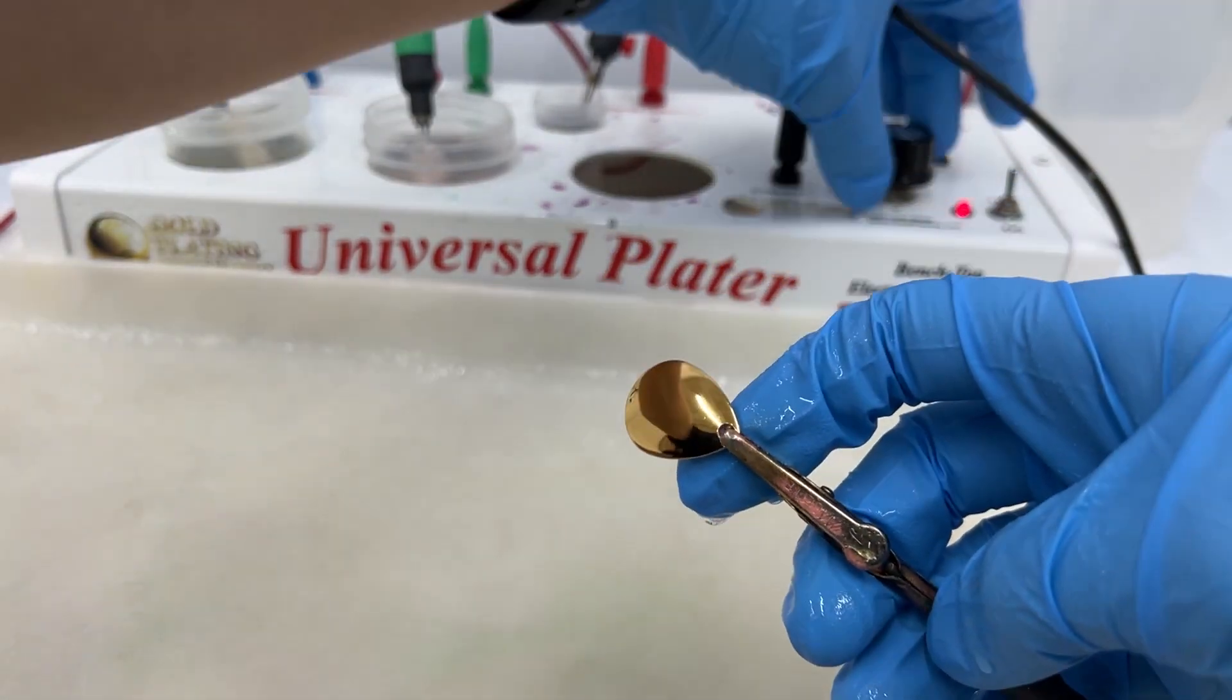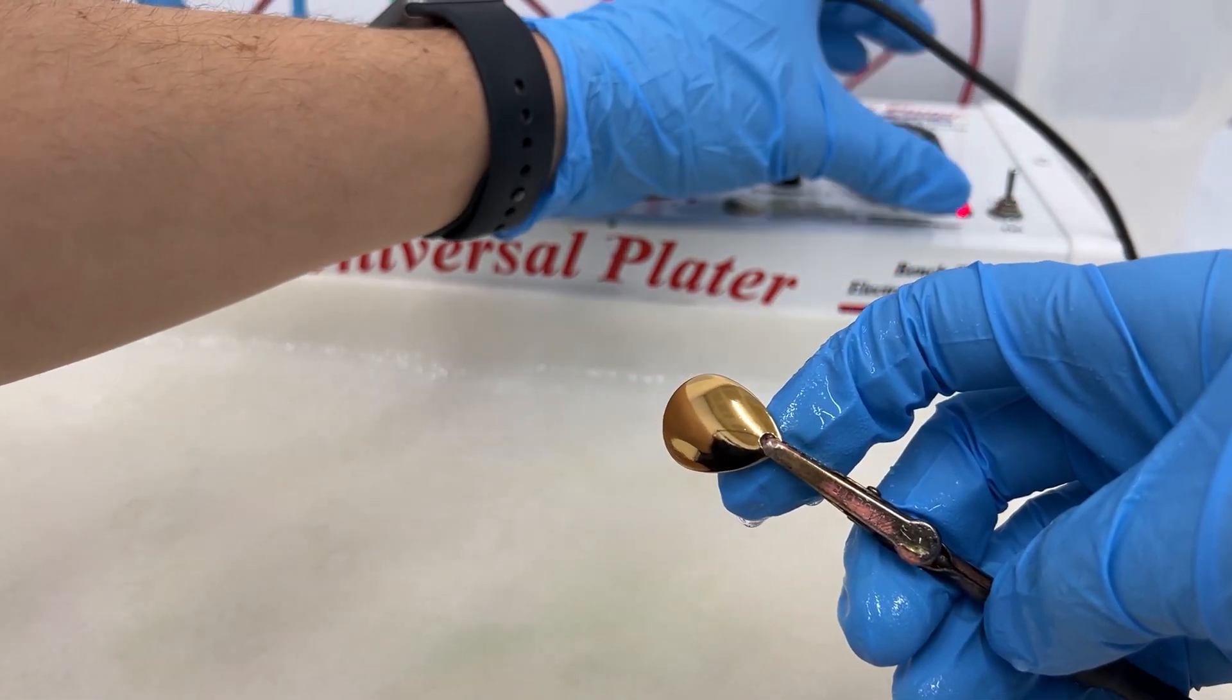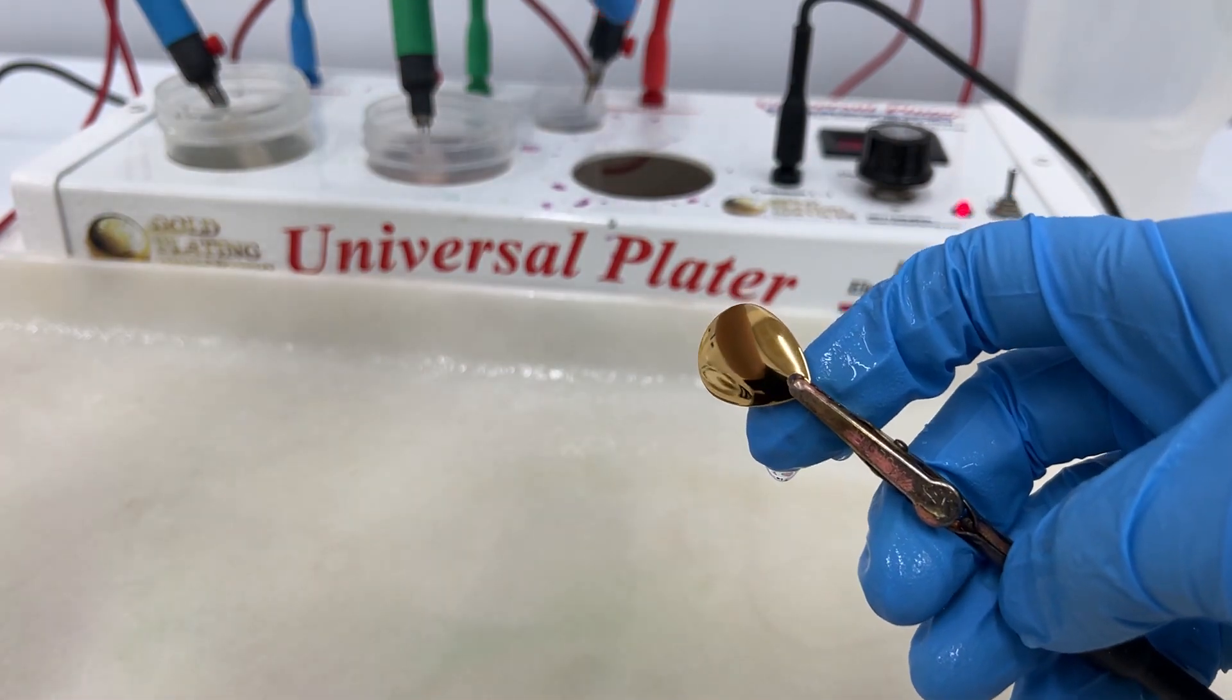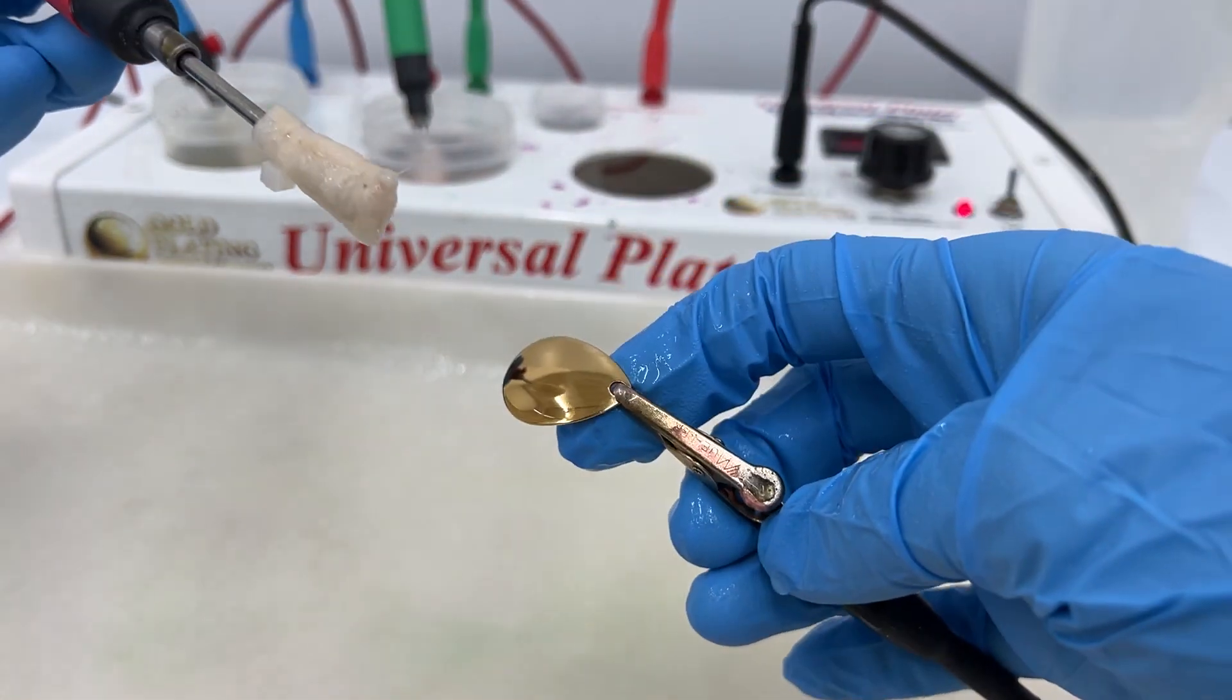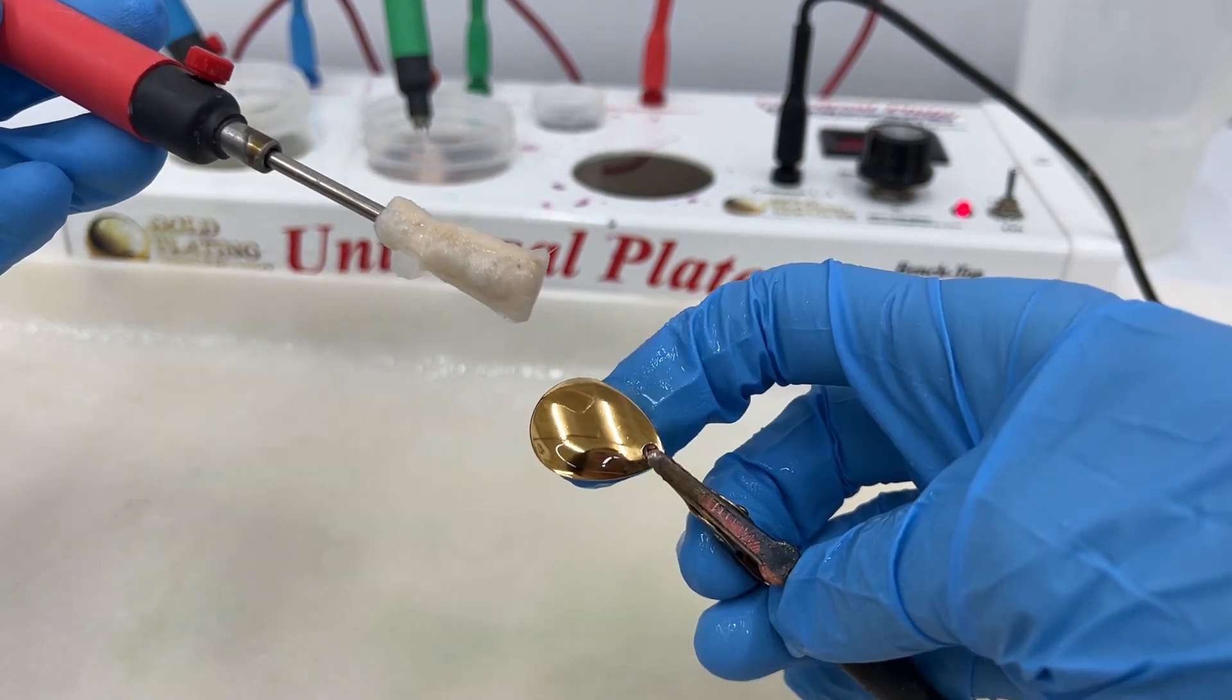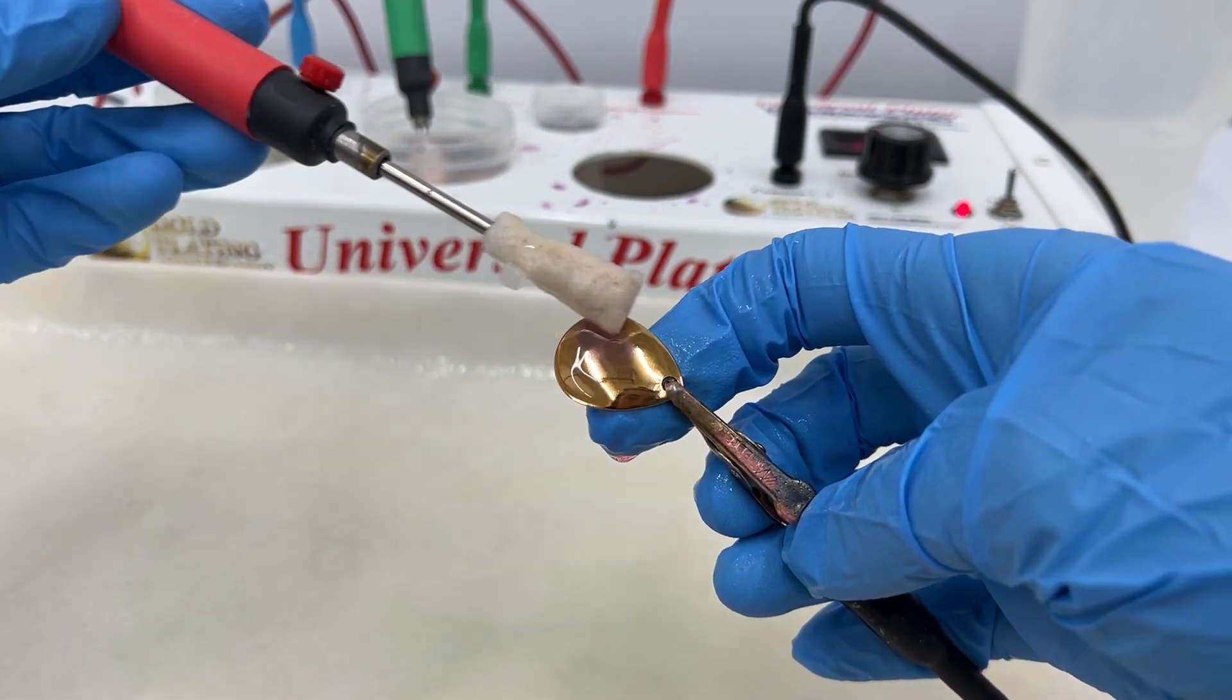And then the NC Silver actually takes about 2 to 2.5 volts. I'm just going to go in between at 2.25. And you can see it's working.